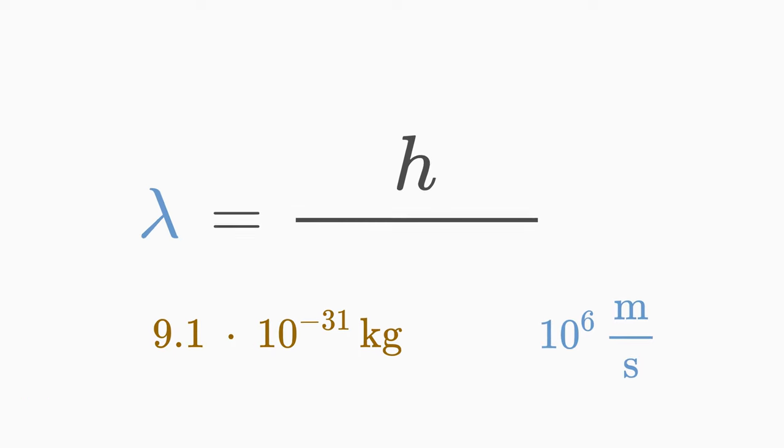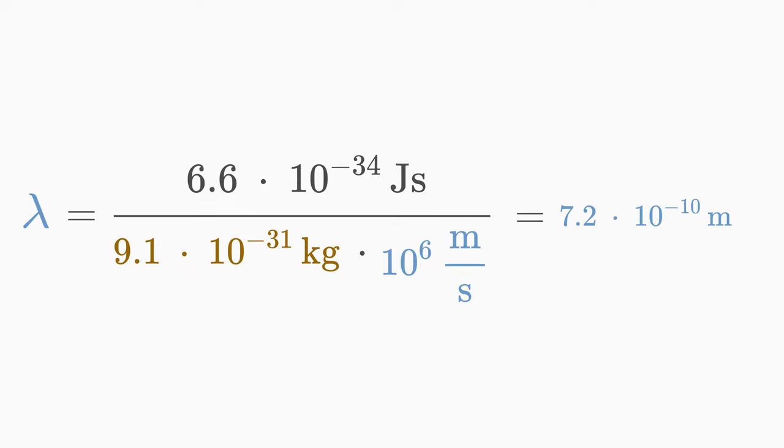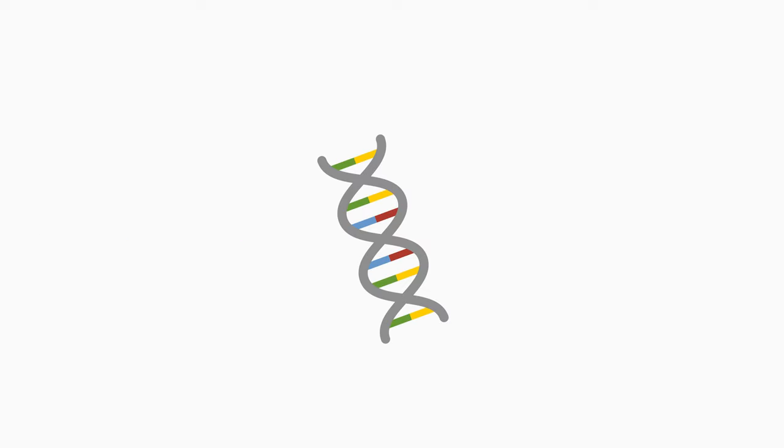Thus, the de Broglie wavelength of a free electron is 7.2 times 10 to the power of minus 10 meters. This is a matter wavelength of 0.72 nanometers. For comparison, the diameter of the DNA double helix is about 2 nanometers.